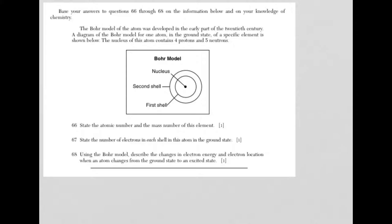Okay, question 66. It's asking you to state the atomic number and the mass number of this element. So you take a look at the picture, and it's a picture of the Bohr model. What you need to do is take a look at the information given above the picture. Always realize that for all three of these questions, you might need information to answer the question.